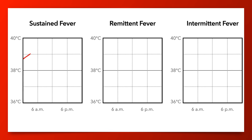Sustained fevers have little fluctuation in temperature. They oscillate less than 1 degree Celsius daily and the body temperature doesn't return to normal, except potentially when an antipyretic is provided.